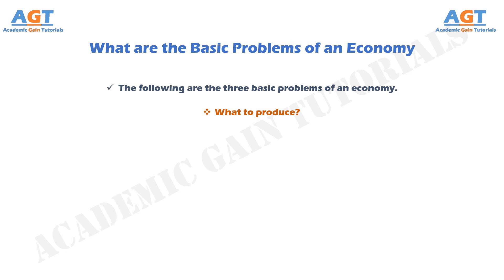The second problem is how to produce. The problem of how to produce means which combination of resources is to be used for the production of goods and which technology is to be made use of in production. Once the society has decided what goods and services are to be produced and in what quantities, it must then decide how these goods shall be produced. There are various alternative methods of producing a good. For example, cloth can be produced either with automatic looms, power looms, or hand looms. Similarly, fields can be irrigated by building small irrigation works like tube wells and tanks, or by building large canals and dams. It is ultimately a problem of the choice of production techniques.